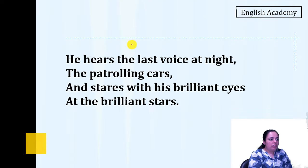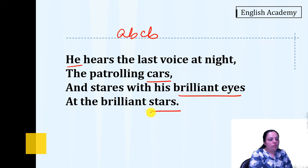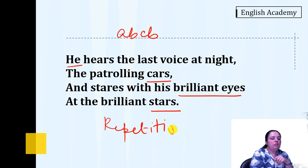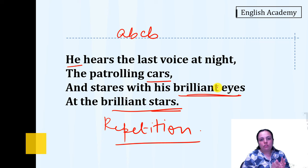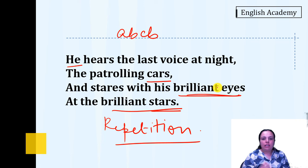In the final stanza, the same ABCB rhyme scheme is used with 'cars' and 'stars' rhyming. Personification and enjambment are used here too. The poet also uses repetition — the word 'brilliant' is repeated in 'brilliant eyes' and 'brilliant stars' — because the poet wants to show a relationship between the tiger's shining eyes and the shining stars. They are familiar to each other: when the tiger was in the forest, he used to see the stars in the night sky, and now locked in the zoo's cell, he can still see those brilliant stars.